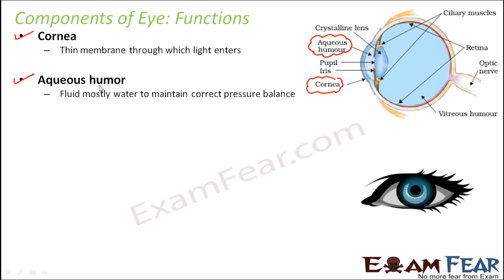The aqueous humor is fluid, mostly water, and its purpose is to maintain the correct pressure balance of the eye. There is a pressure inside the eye which should not be very less nor very high. That is why it is called aqueous — 'aqua' means water — and since it is mostly made up of water, it is called aqueous humor.